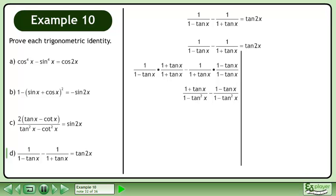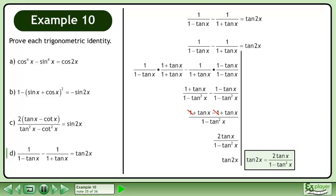Simplify. Combine the fractions. This becomes 2 tan x over 1 minus tan squared x. This is the same as tan 2x. The left side equals the right side, completing the proof.